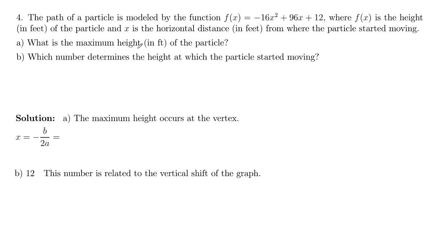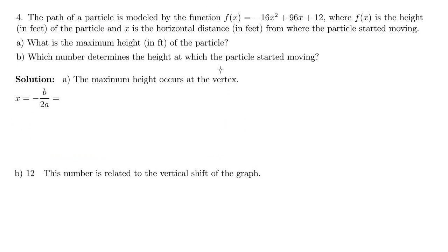So we want to first know what is the maximum height in feet, and then what number determines that height. So the maximum height occurs at the vertex here, and remember the x-coordinate of the vertex is negative b over 2a.